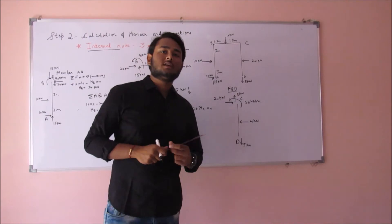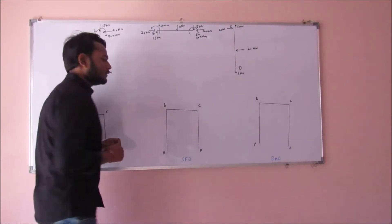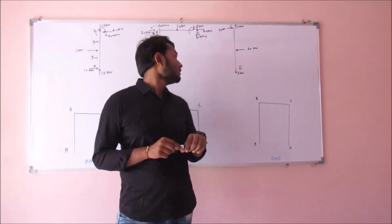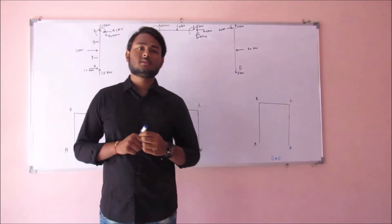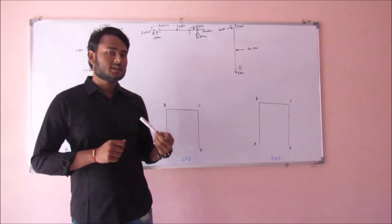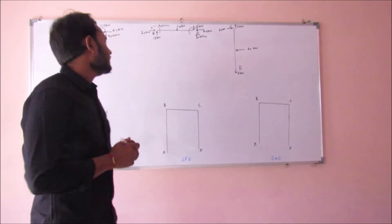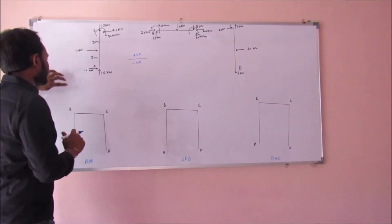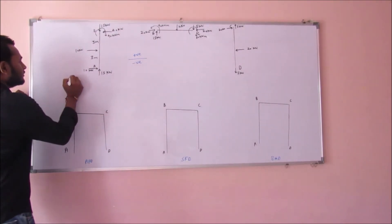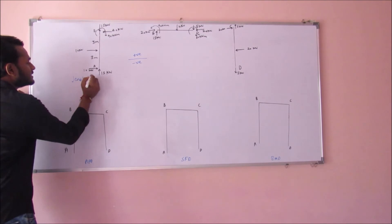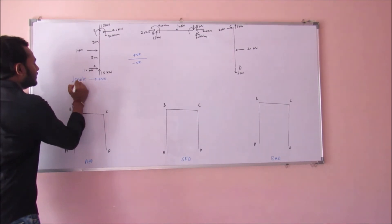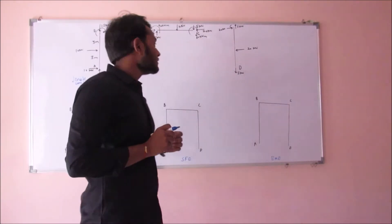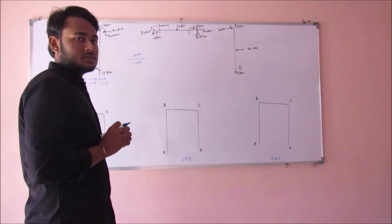Now that's it — we have completed step 2. Now we have to construct the AFD, SFD, and BMD for the given portal frame. For this, we need to fix a sign convention which we must follow for all three diagrams. The sign convention I take is upwards positive and downwards negative. Now for AFD, there is a convention: we take tensile forces as positive and compressive forces as negative.